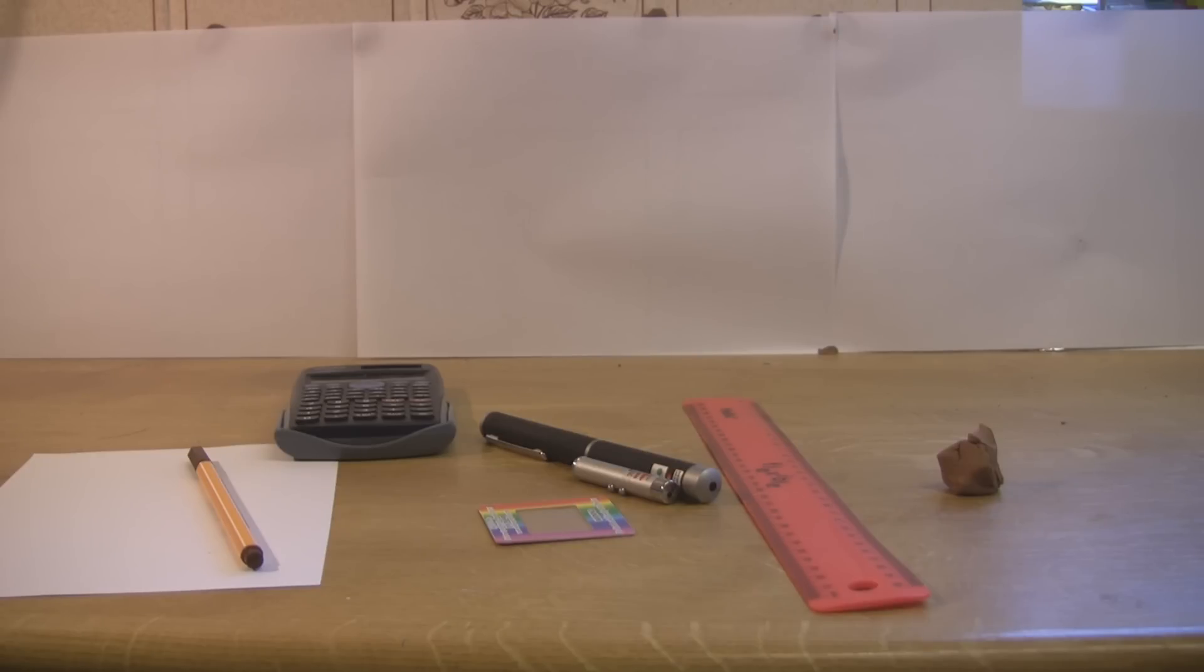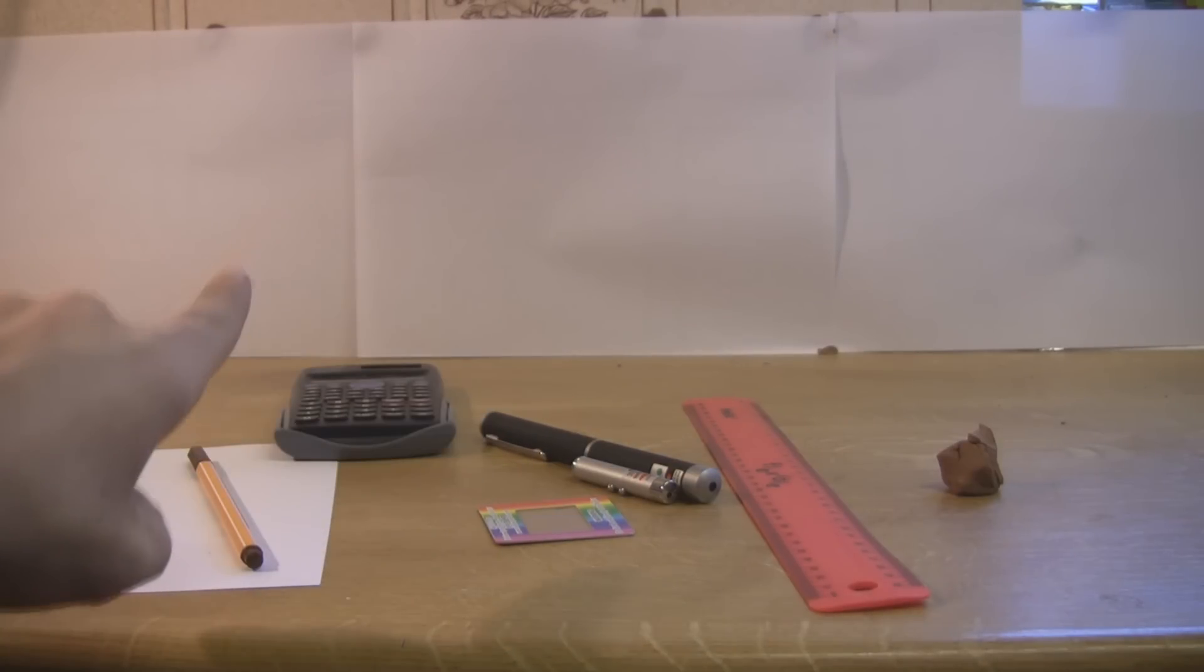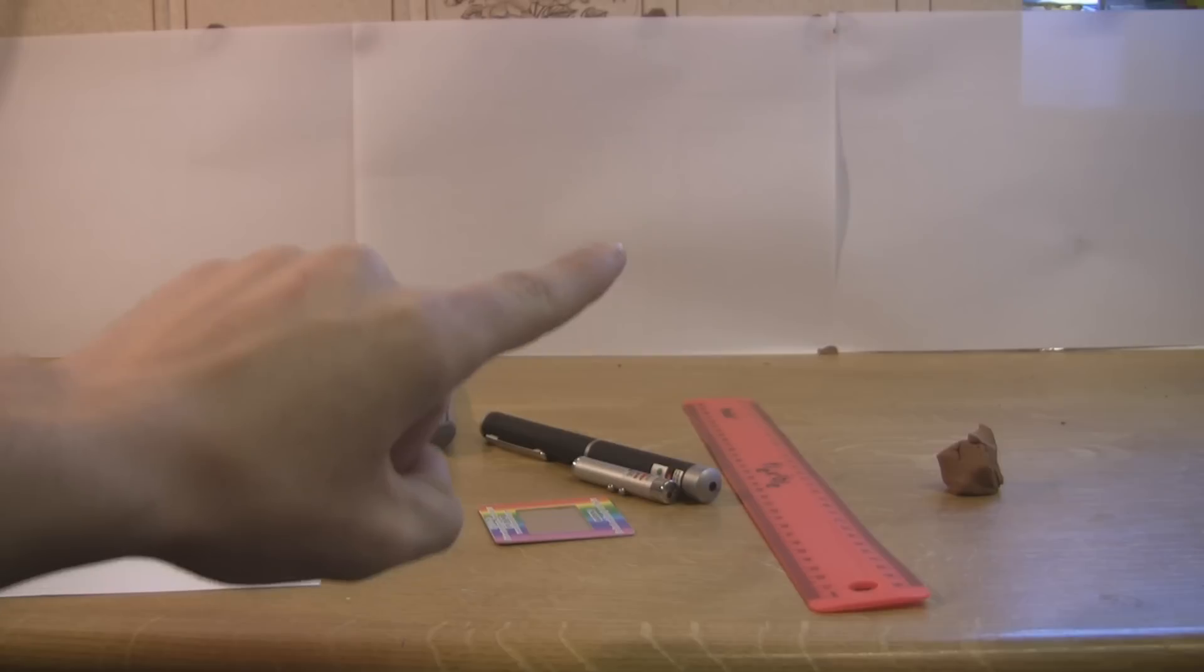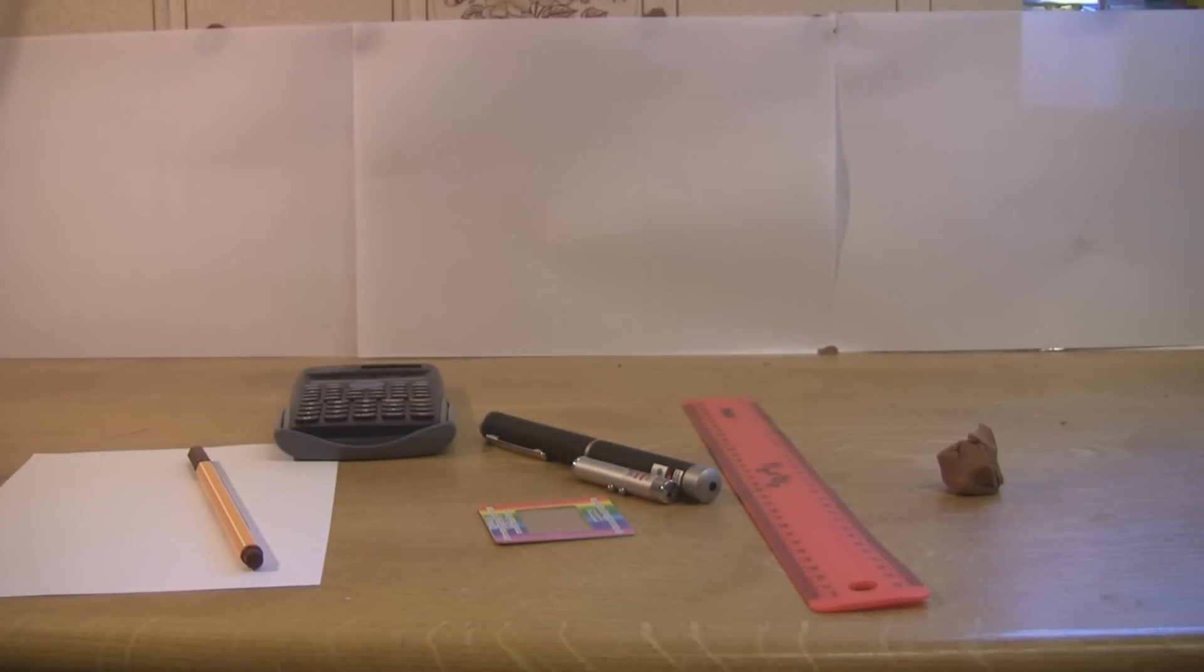It will all become a lot clearer as we progress with the experiment. When it comes to working out the angle sin theta, things get a little bit more tricky. The easiest way to go about this is to measure the distance between the diffraction grating and the screen at the back, and the distance between the zero order and the first order. We can then use trigonometry to work out our angle sin theta. If you need a reminder of trigonometry, you can click right here, or there's a link in the description below.